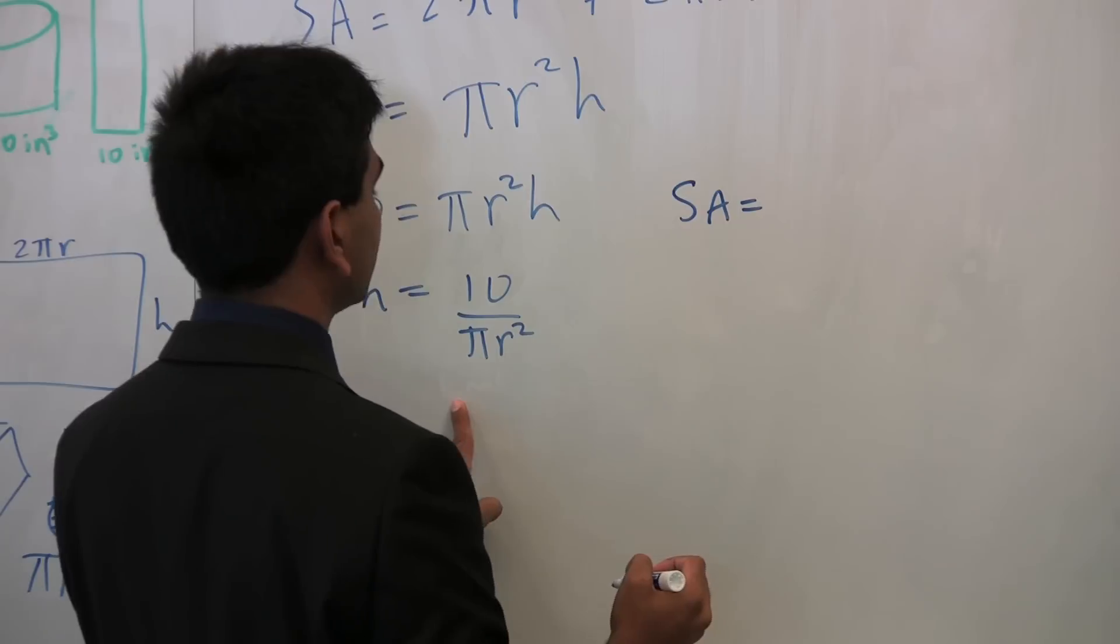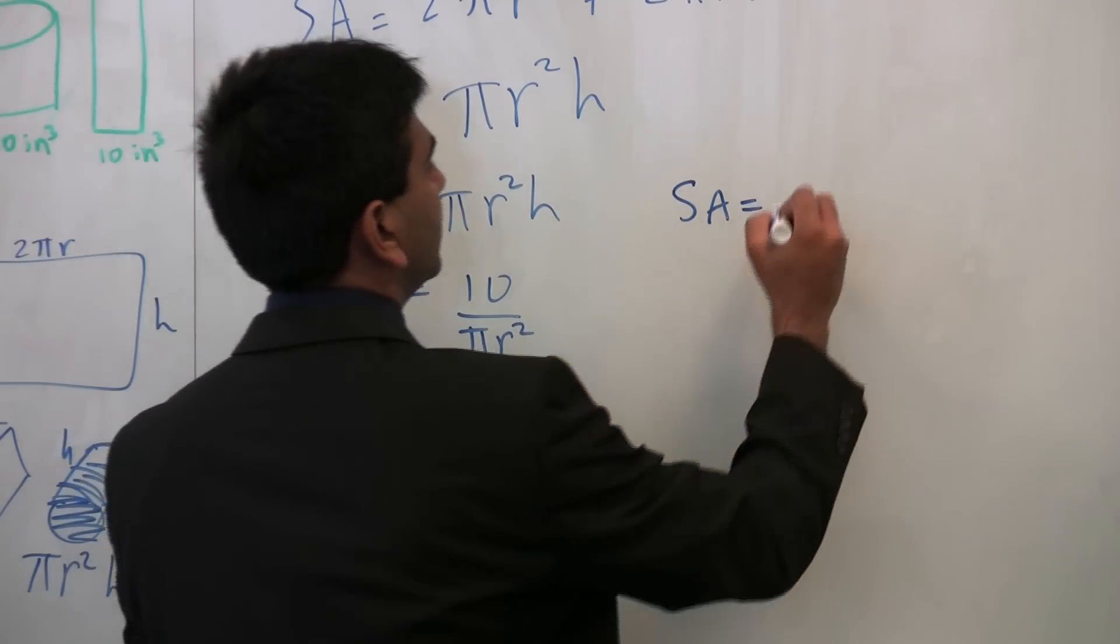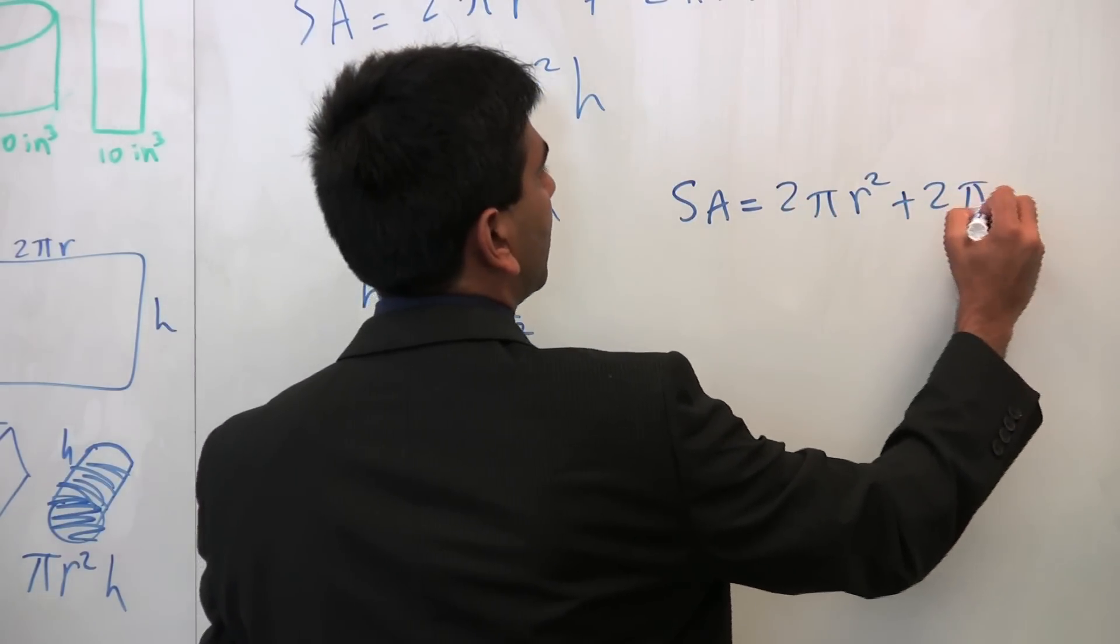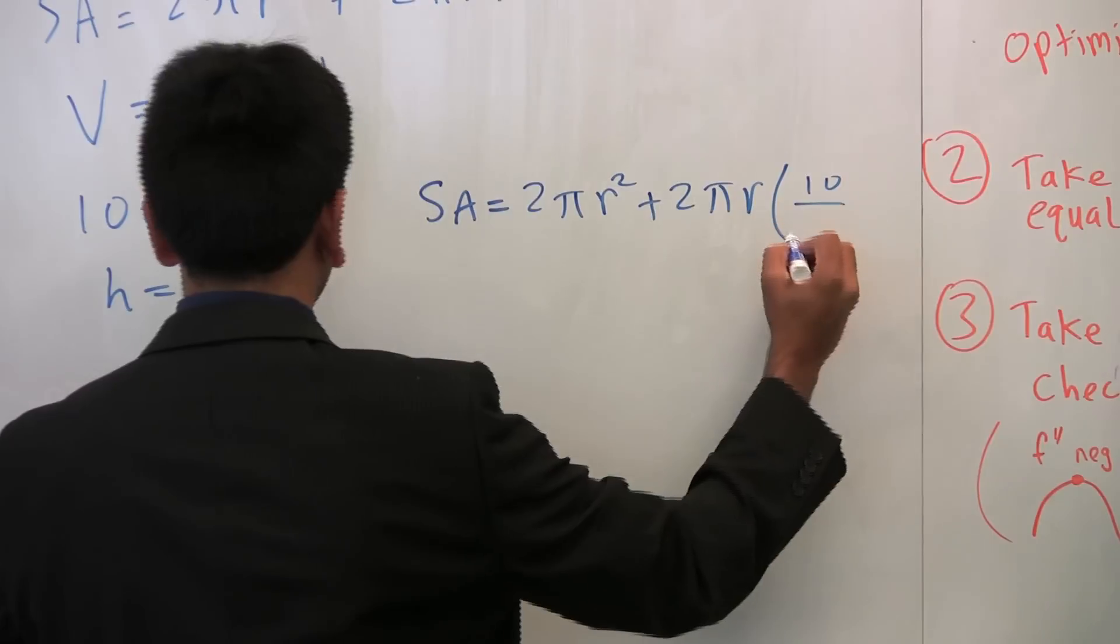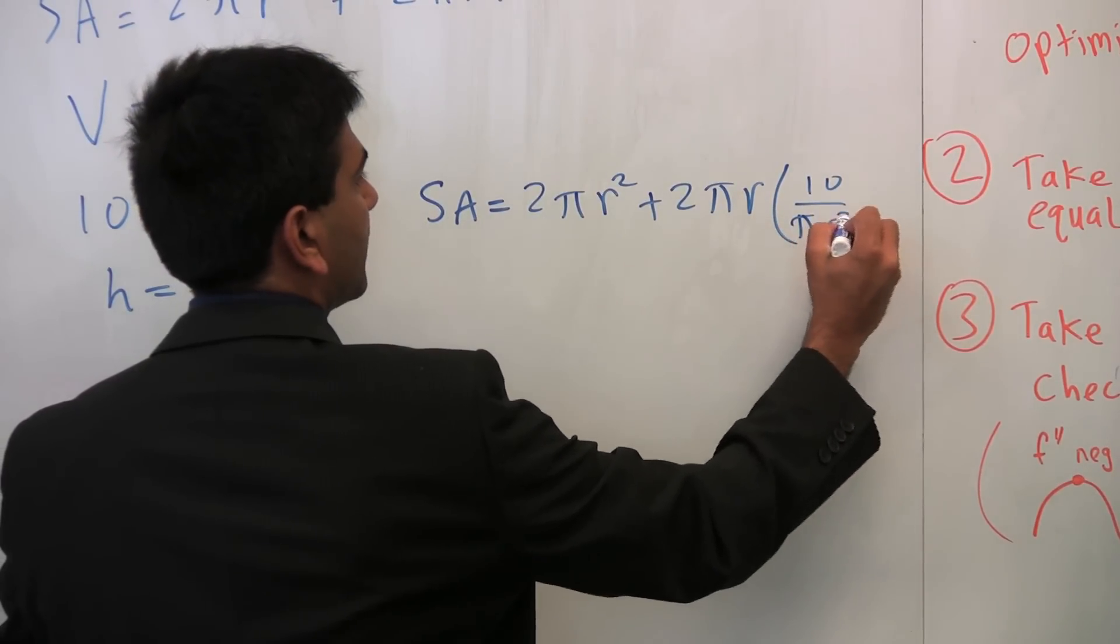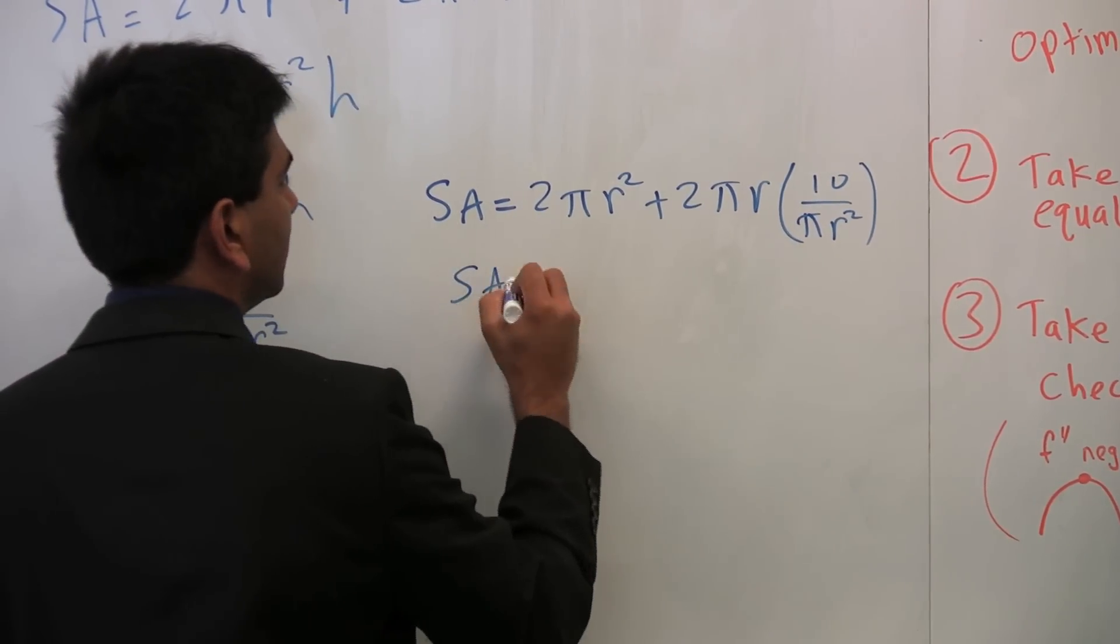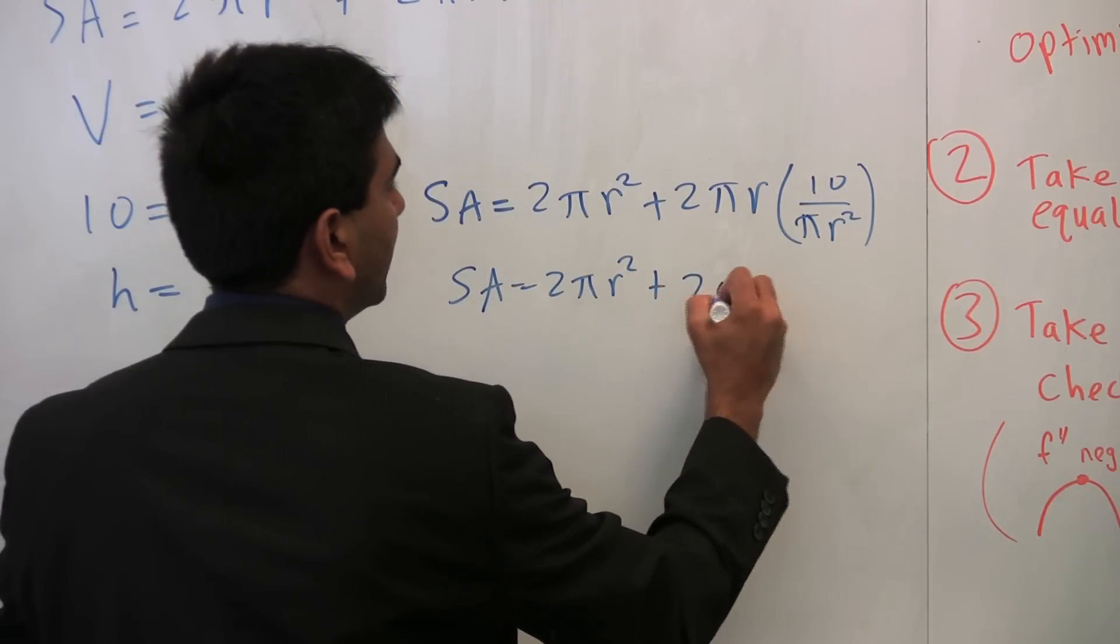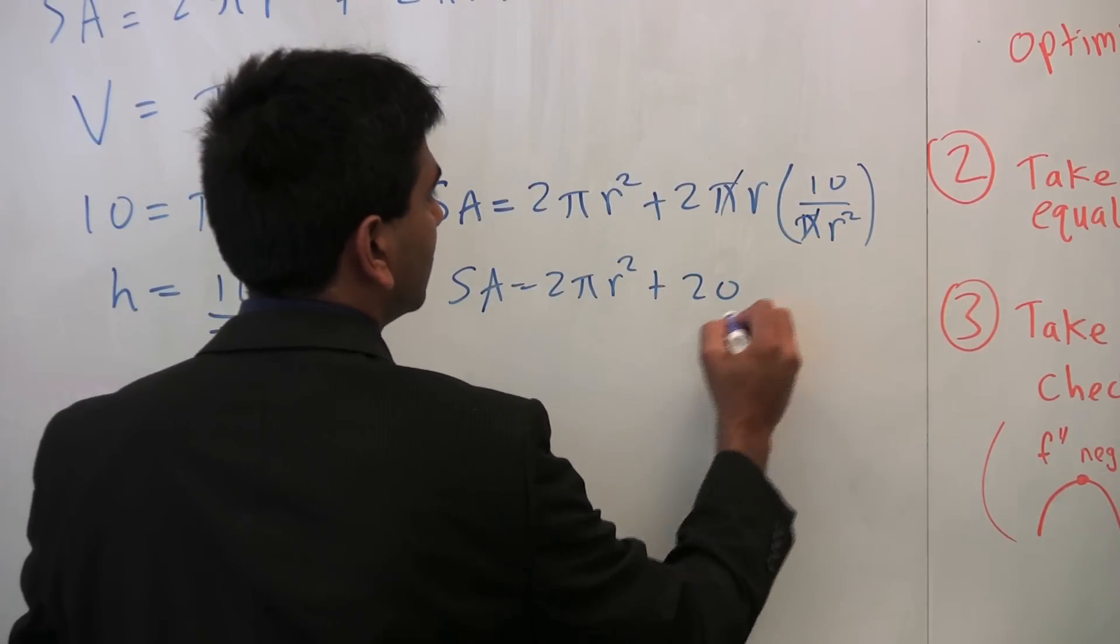So now our new surface area equation is surface area equals, every time we see an h, we're going to replace it with 10 over pi r squared. So 2 pi r squared plus 2 pi r, and instead of h, 10 over pi r squared. And then, of course, you can simplify that to 2 pi r squared plus 20, pi is cancel, over r.